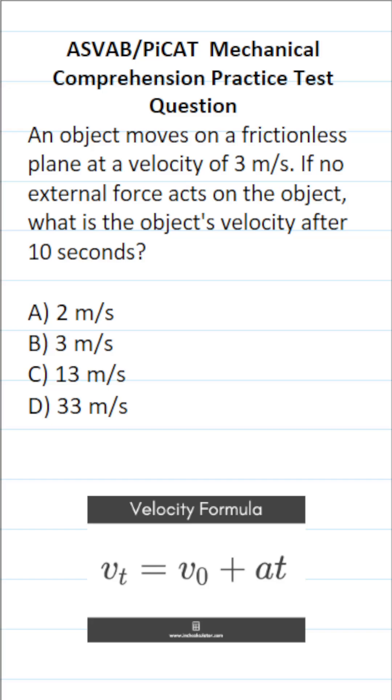So in this case, it's helpful to know the velocity formula. V of t, an object's final velocity, is equal to V of o, its initial velocity,